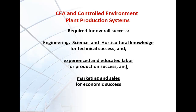Three components are required for overall success. Engineering, science, and horticultural knowledge are necessary for technical success. Experienced and educated labor is necessary for production success. And good marketing and sales is necessary for the economic success of any viable controlled environment plant production system.